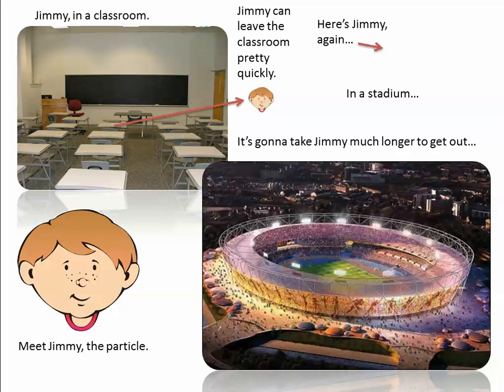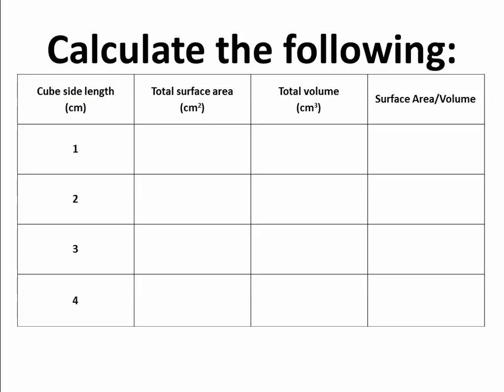I apologize to all sumo wrestlers — I've always wanted to be one, but my belly sticks out and nothing else. Now, we are going to pretend that cells are the shape of cubes — perfect cubes. You know what a cube looks like: the lengths are all exactly the same. You should know how to calculate the surface area. A cube has six sides. The total volume is calculated by the side length cubed, or length times width times height, which should all be the same.